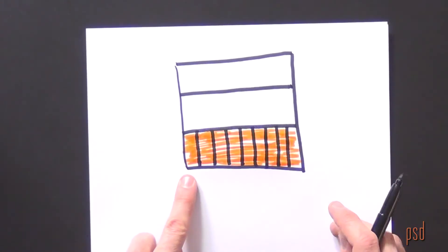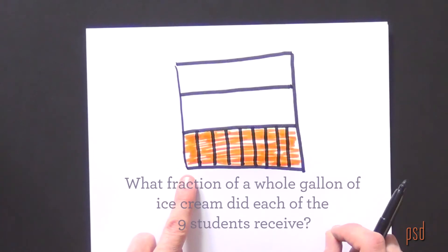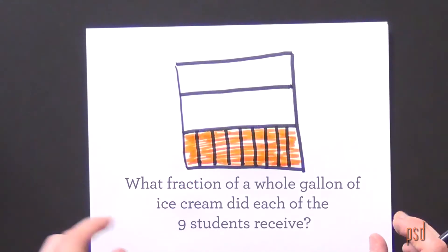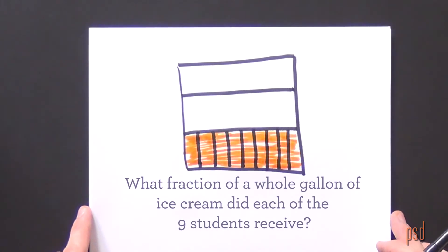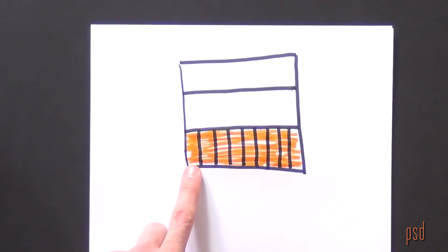The question asks specifically, what fraction of a whole gallon of ice cream did each of the nine students receive? Well, each student received this little portion here, but we need to know what fraction of a whole gallon is that little piece.